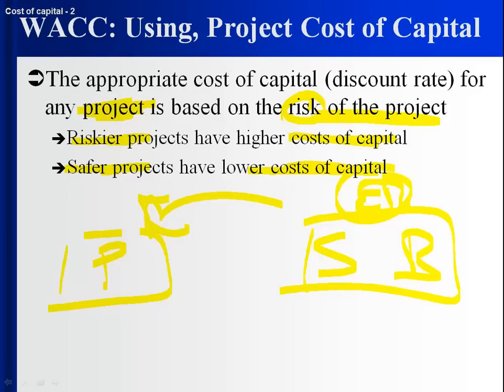So a risky project gets compared to risky stocks and bonds. They have a higher expected return, higher cost of capital. Safer projects get compared to safer stocks and bonds. They have a lower expected return, lower cost of capital.